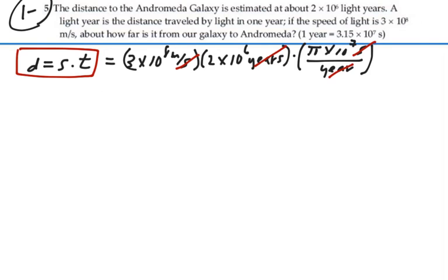So we're going to end up with a number in terms of meters. If I have 3 times 10 to the 8 times 2 times 10 to the 6 times pi times 10 to the 7, that is 1.885 times 10 to the 22.